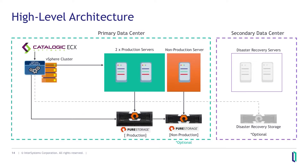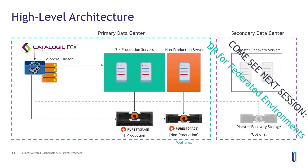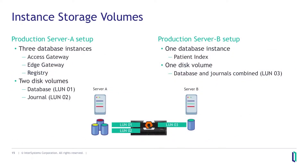Note that this process doesn't require a single flash array in the primary data center — using two is good practice to protect from an issue with the production array. On the server configuration side: Server A consists of three database instances — an access gateway, an edge gateway, and a registry from HealthShare — sitting on two disk volumes, LUN 1 and LUN 2. On the right, production Server B has one database instance — the patient index — on one disk volume. This is purely for example purposes; you can have multiple LUNs, multiple instances, or just one.